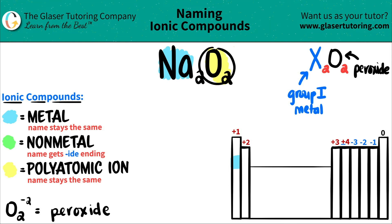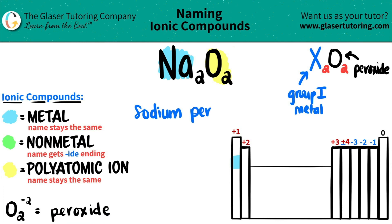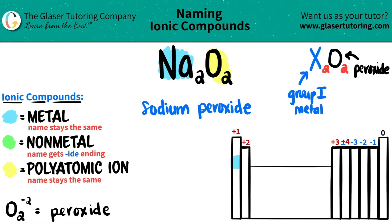Now we have a metal and a polyatomic, so we're ready to name. The metal name always stays exactly the same — same rules as before. Sodium, which was the metal, that's sodium. And since O₂ as a whole is peroxide, that's the polyatomic, and that name always stays the same, so it would just be peroxide. Since sodium is not in the transitional element block, we don't need a Roman numeral. Sodium is not a transition metal. So Na₂O₂ is sodium peroxide.